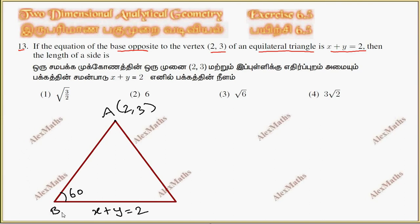This is point A, this is B, and this is C. This line is x, and the y value is 2 minus x, so this is point B. So we identify the points and find the slope.